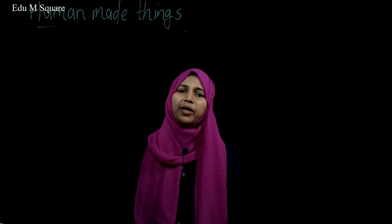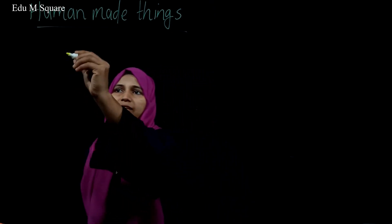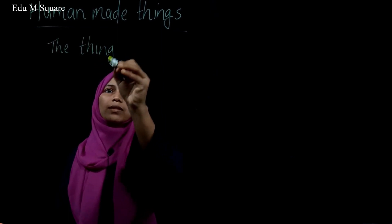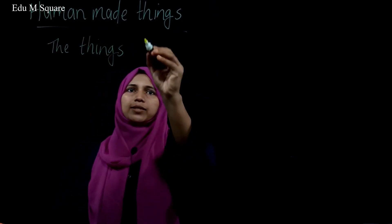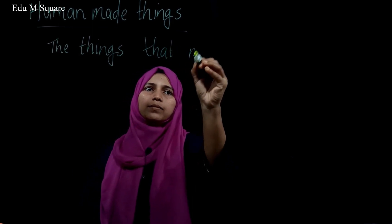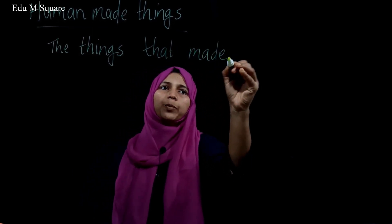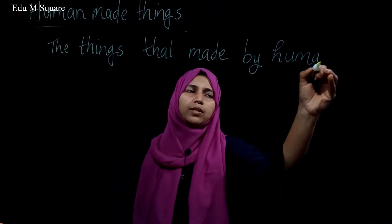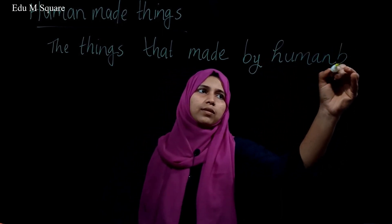So, what are human-made things? Table, chair, our pen, pencil, books, etc. These are human-made things. What are human-made things? The things that are made by human beings. So, let's try to figure out why they are human-made things.